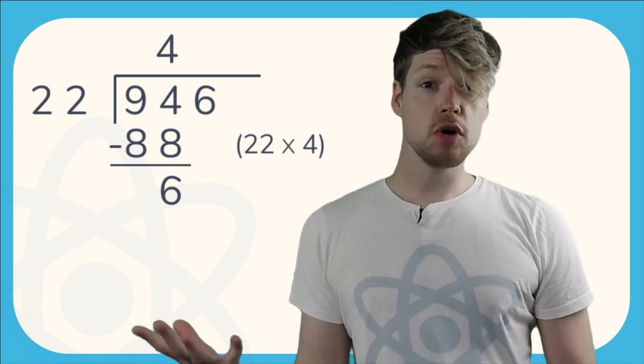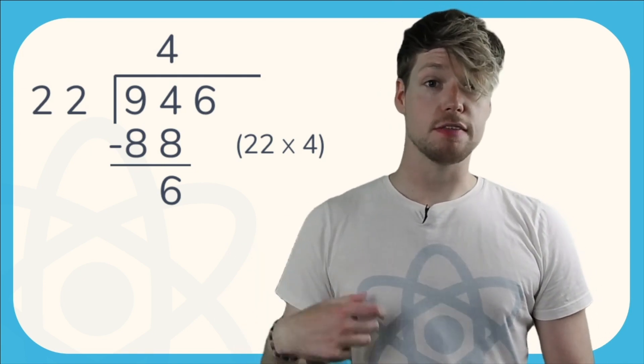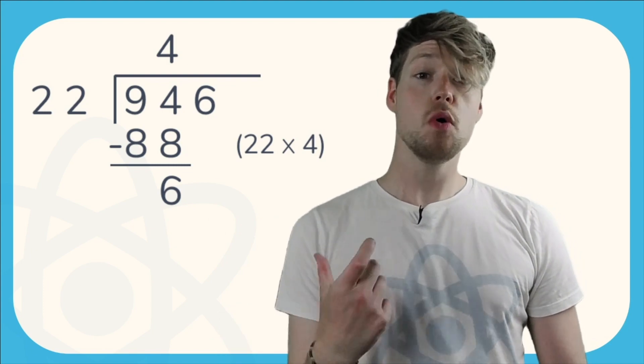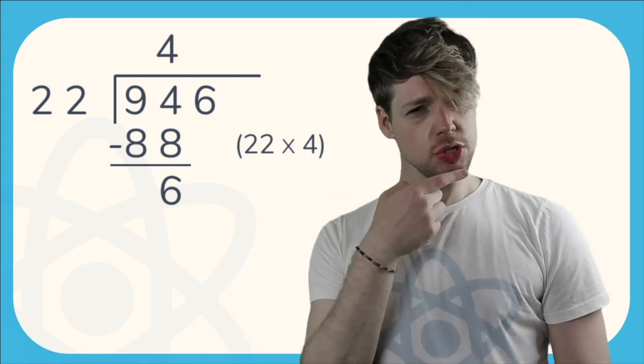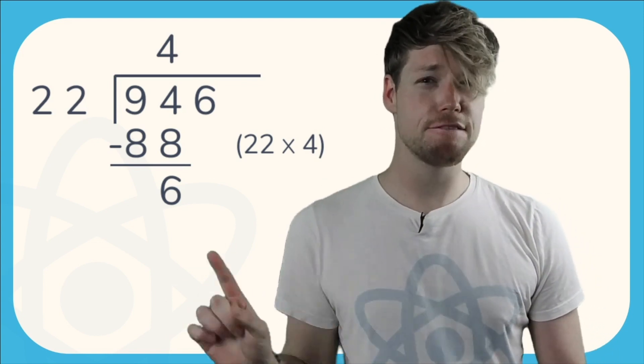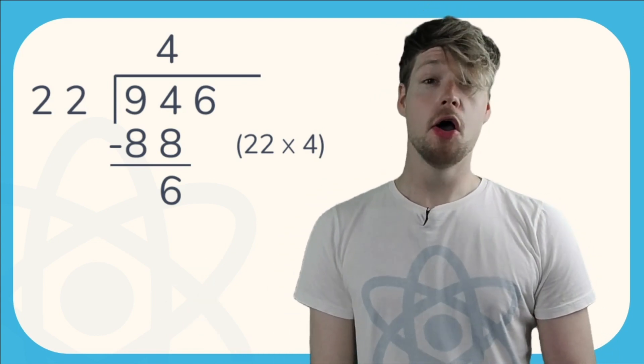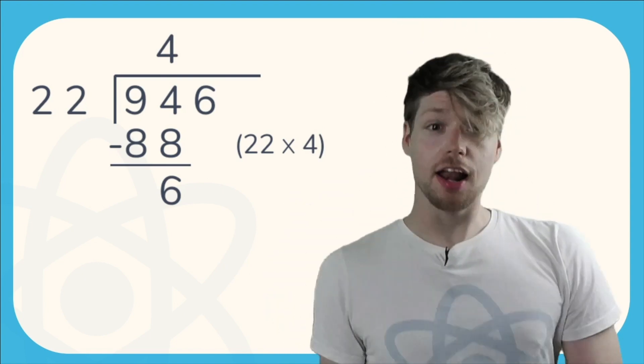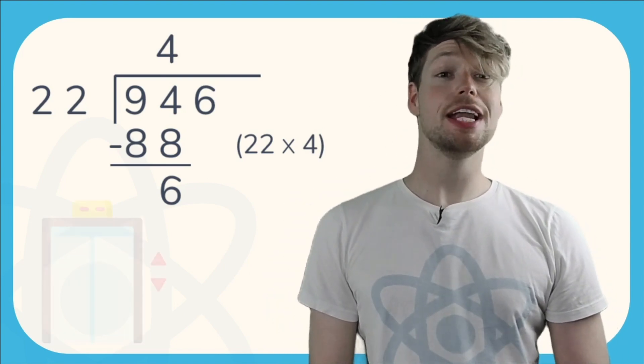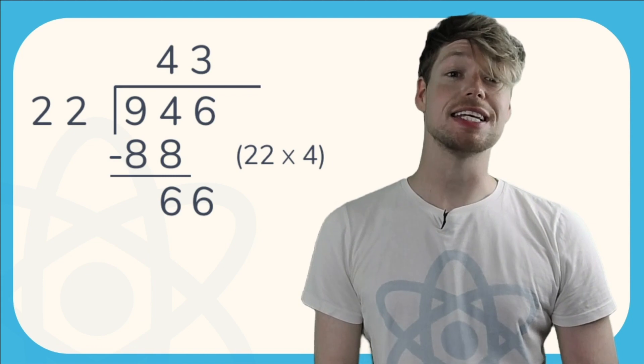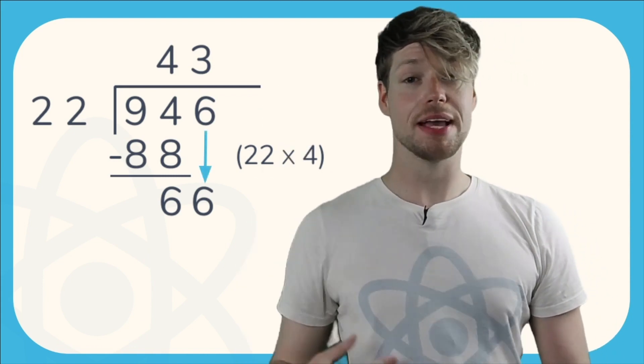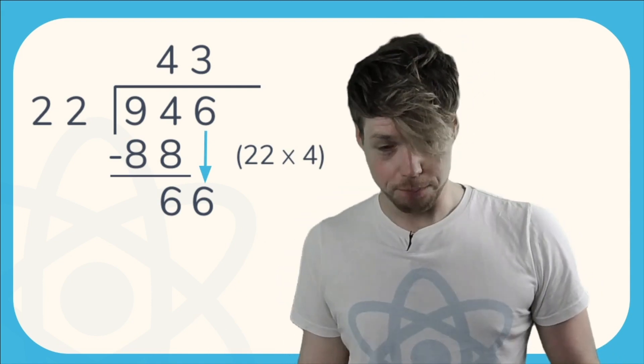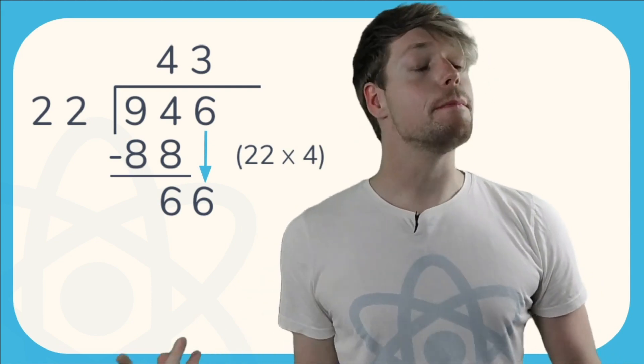So the full sentence would be 94 divided by 22 is 4 remainder 6. Now we're not quite done. Do you know what we need to do with that 6 at the end, that final digit in the ones column? We need to go down like an elevator. We need to bring that 6 down, so we bring the 6 from the ones column down to make 66. What we then need to do is repeat that process all over again.